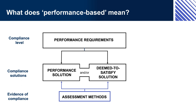For example, the NCC doesn't say that any particular material must be used for the walls in a building. It says that the materials used and the way they are used must meet certain performance standards — for example, in terms of strength, fire resistance, noise transmission, and energy efficiency. The designer or builder can theoretically use any material that meets the required performance standards.